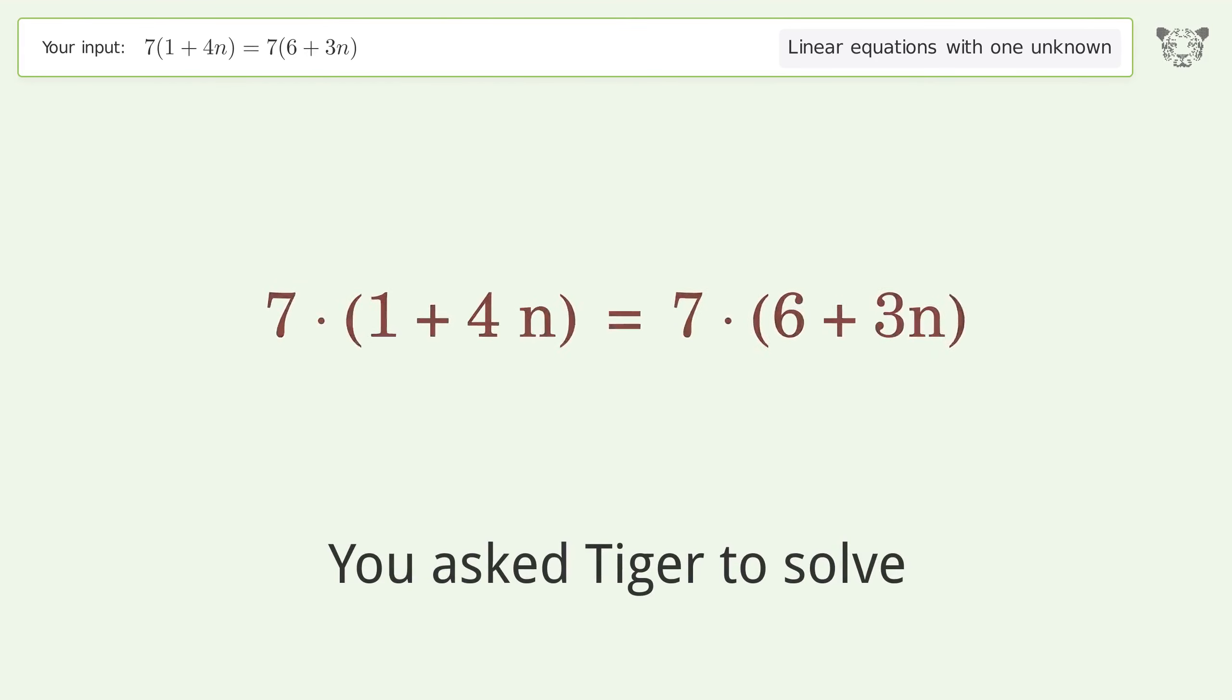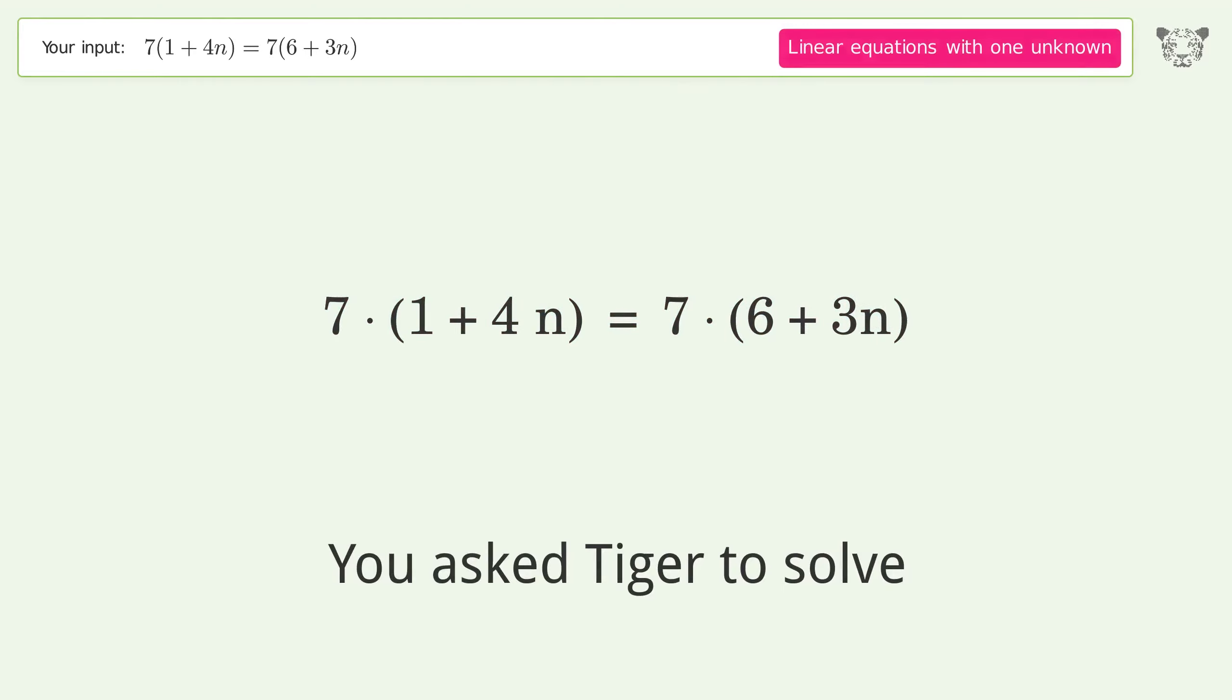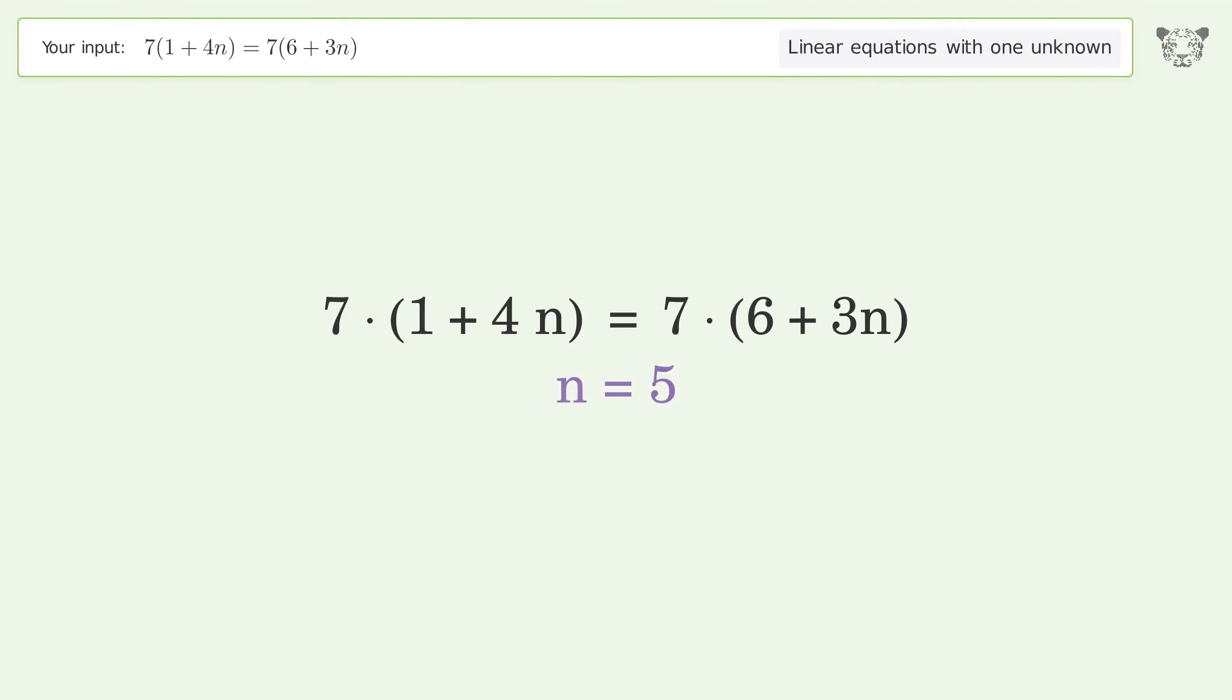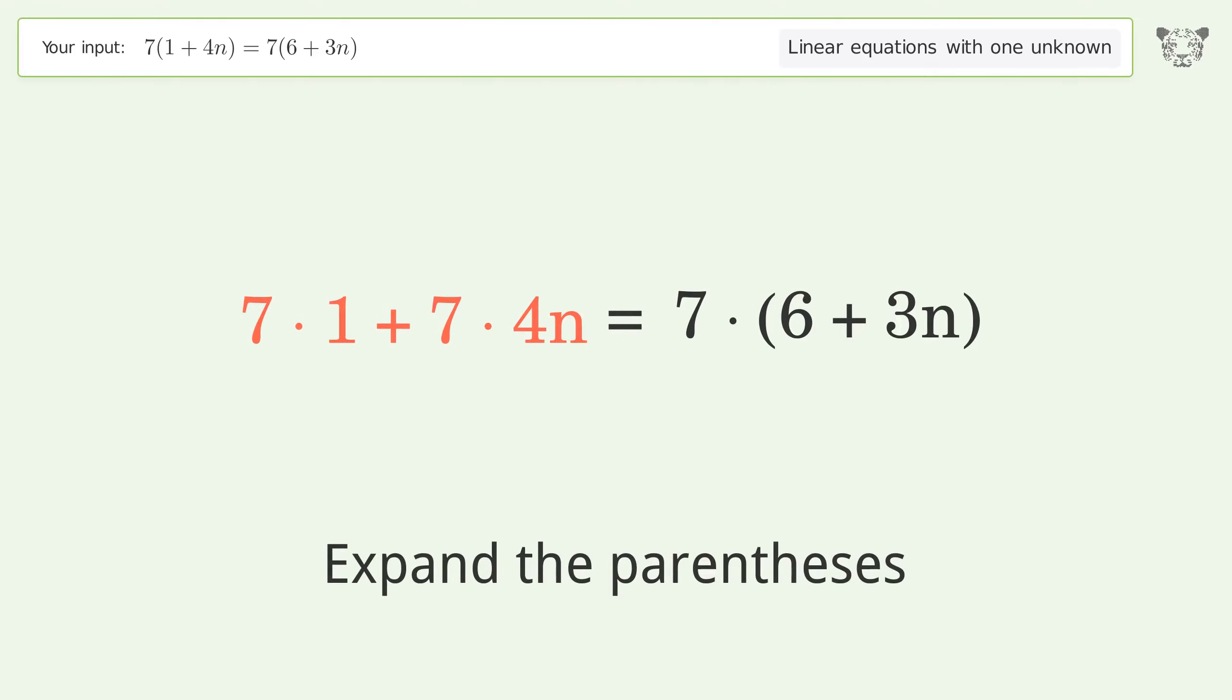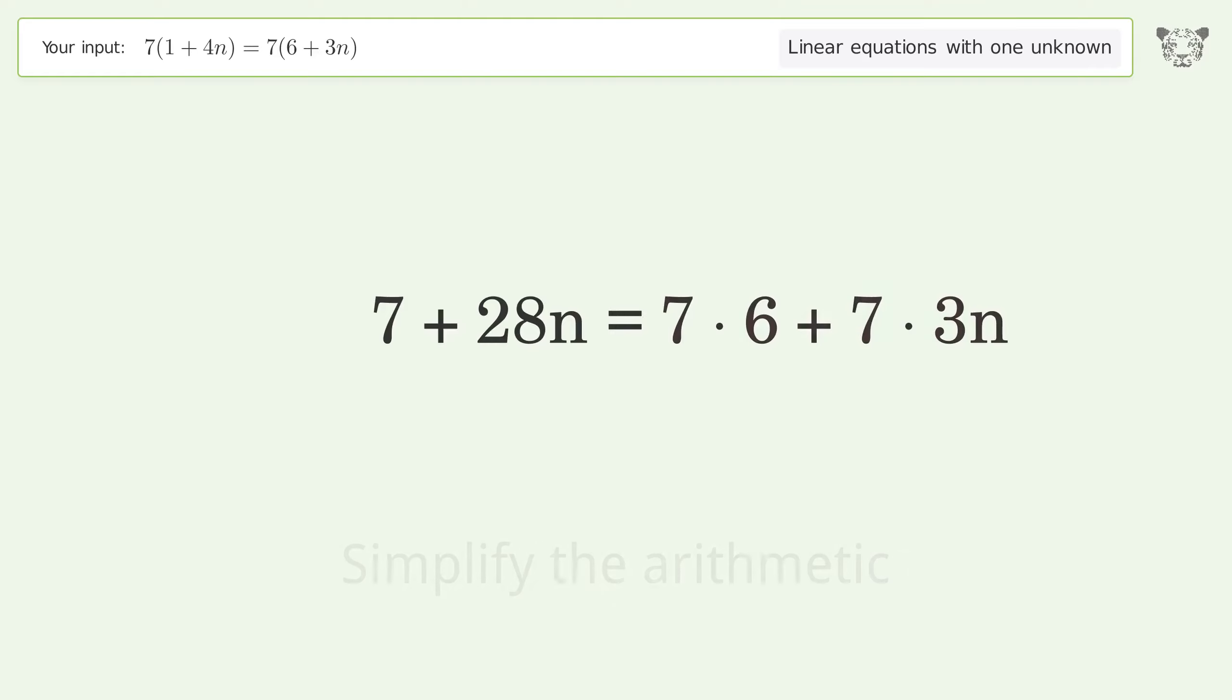You asked Tiger to solve this linear equation with one unknown. The final result is n equals 5. Let's solve it step by step. Simplify the expression, expand the parentheses, simplify the arithmetic, multiply the coefficients. Expand the parentheses, simplify the arithmetic, multiply the coefficients.